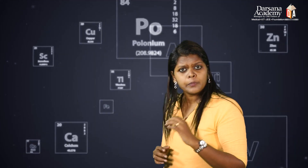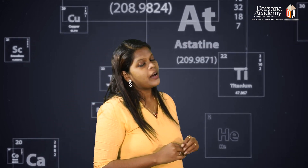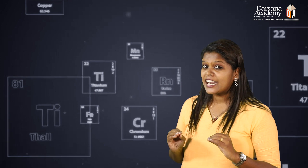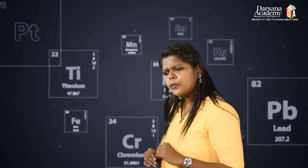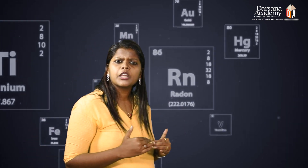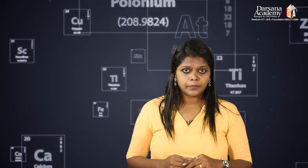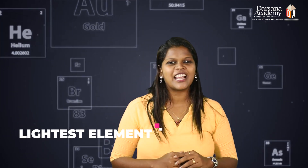Hydrogen has a unique position in the periodic table. It shows some similarities with alkaline metals as well as the halogen family. It is located at the first position of the periodic table, in the topmost position, and it is the lightest element.